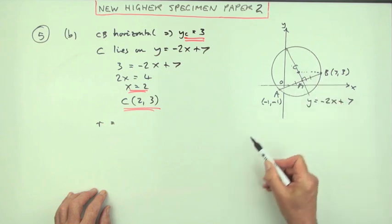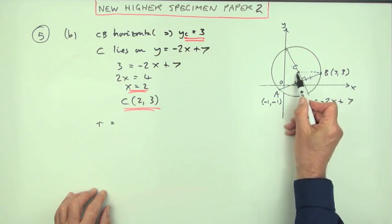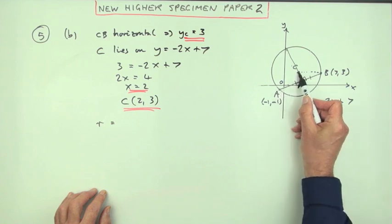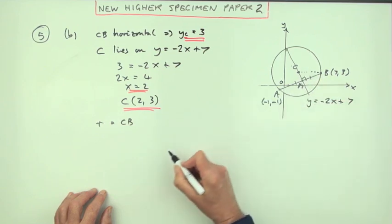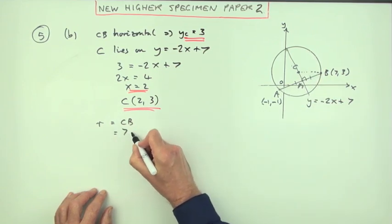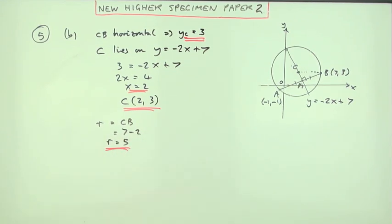The distance from C to B is simple because it's horizontal. This is a sloping one, I'd have to use Pythagoras. That's horizontal, so I just subtract the x-coordinates. So it's 7 take away 2, which is 5. That was just a count the boxes distance then.